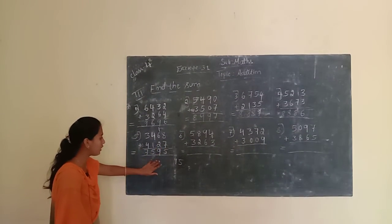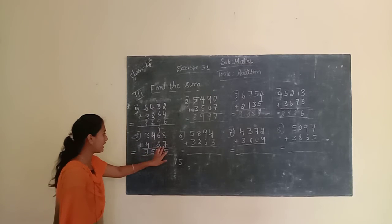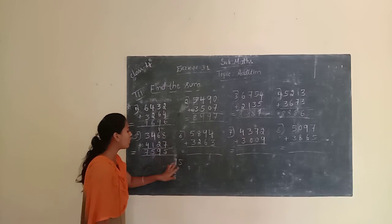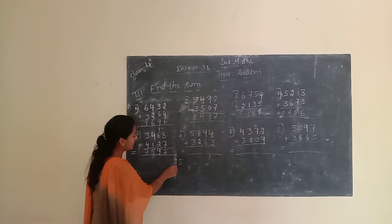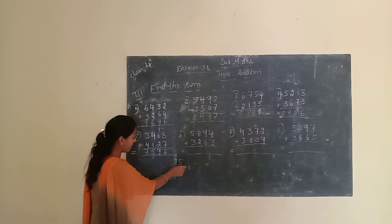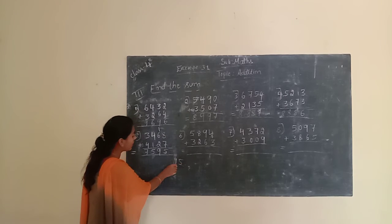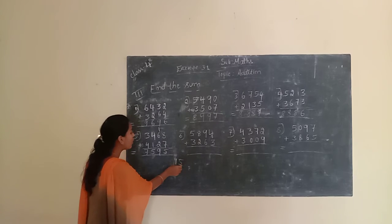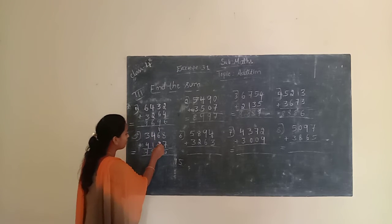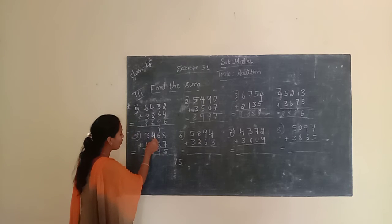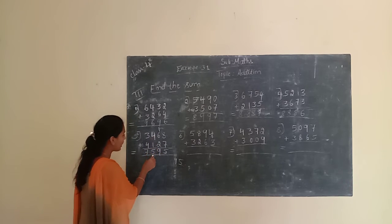We have to find out the sum. 8 plus 7 is 15. 5 is the unit place, 1 is the 10th place. We have to write 5 in the unit place. Next, carry 1. 6 plus 1 is 7, and 7 plus 2 is 9. We have to write 9. Next, 4 plus 1 is 5. Then 3 plus 4 is 7.